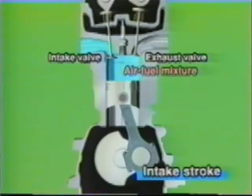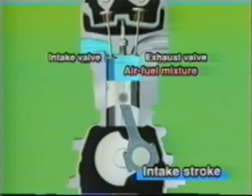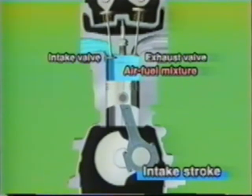For the intake stroke, the exhaust valve is closed and the intake valve is opened. As the piston is lowered, the upper cylinder space increases, making the internal pressure of the cylinder negative. The mixture of fuel and air is then drawn through the intake valve into the cylinder.